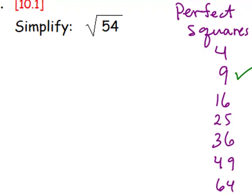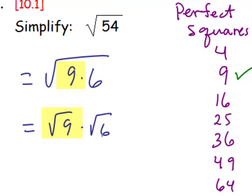Let's write this as the square root of 9 times 6, and we can then separate it and make the square root of 9 times the square root of 6.